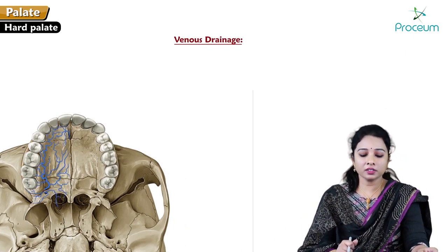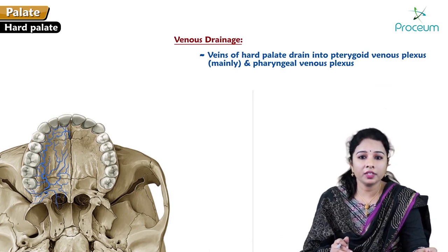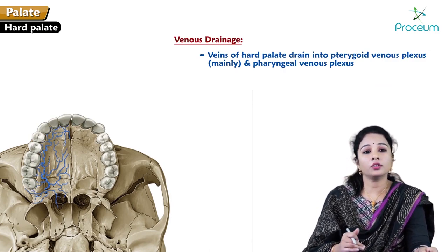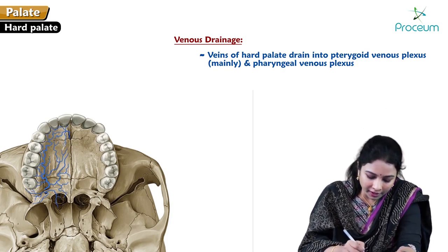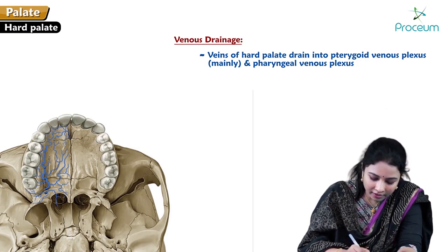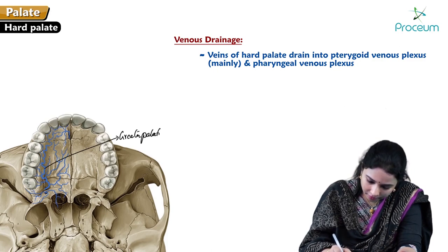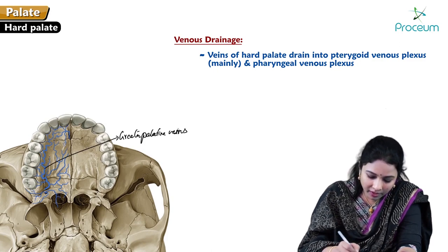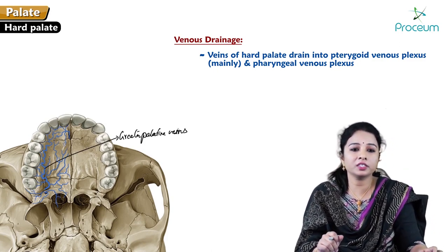For venous drainage, the veins of the hard palate drain mainly into the pterygoid venous plexus and also into the pharyngeal venous plexus. The greater palatine veins run alongside the greater palatine artery.